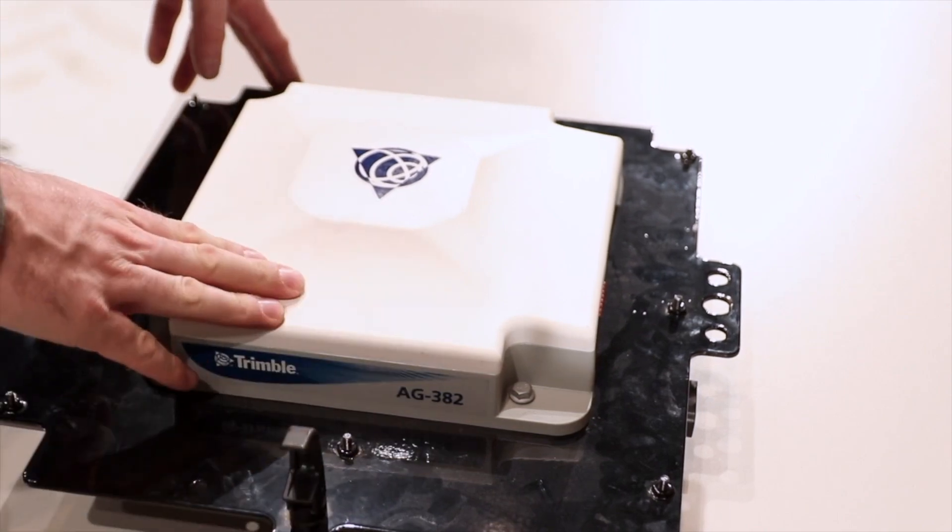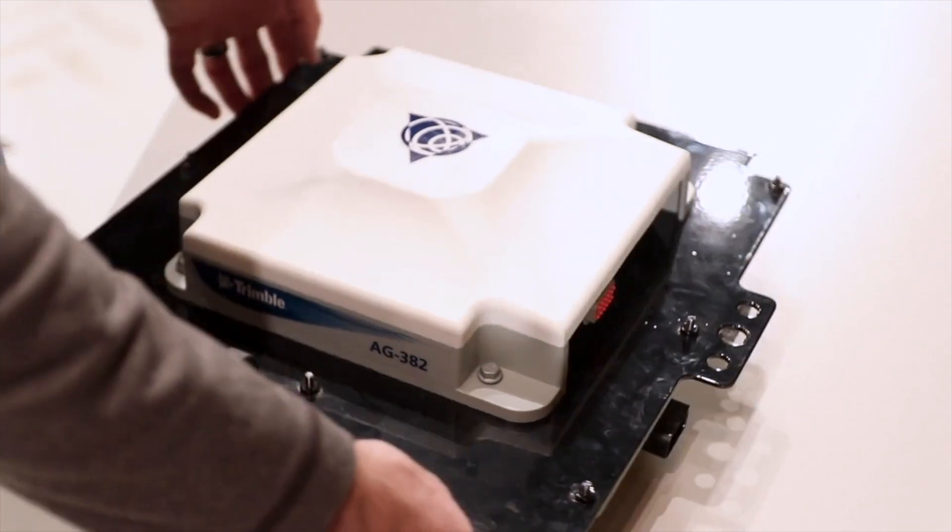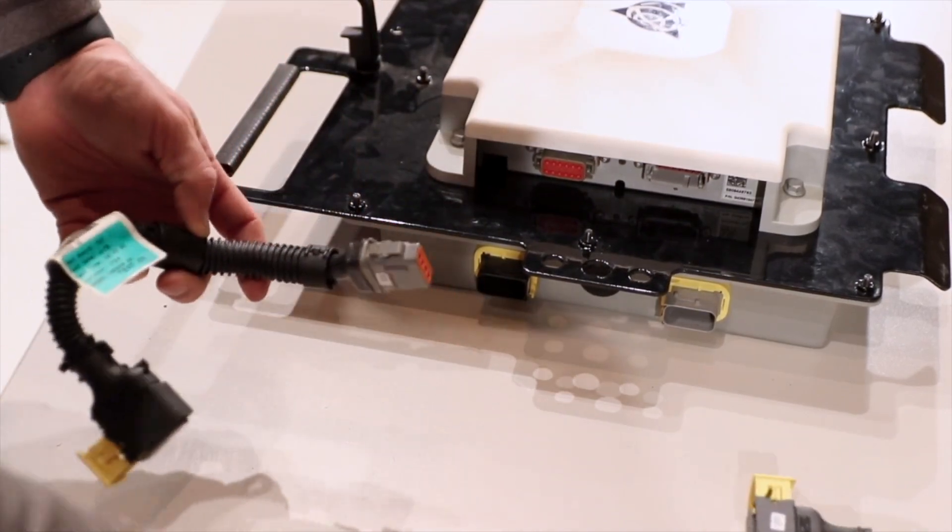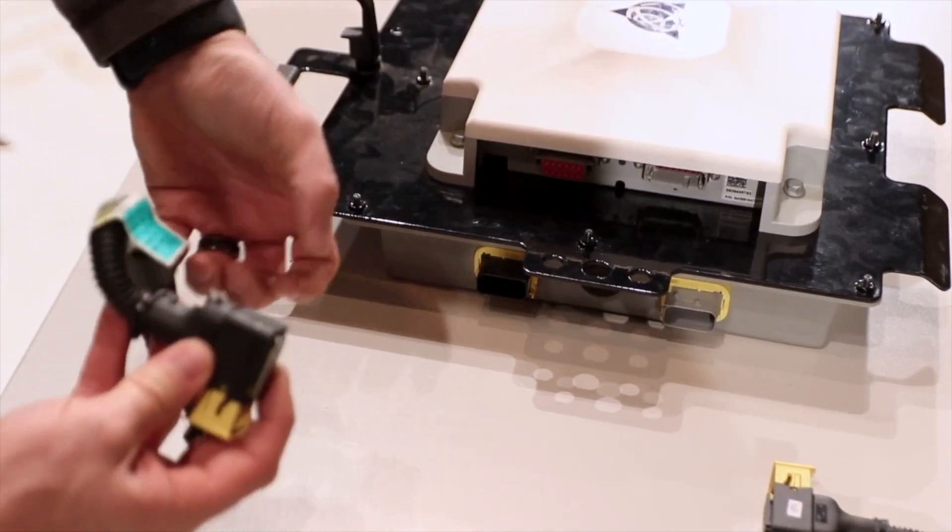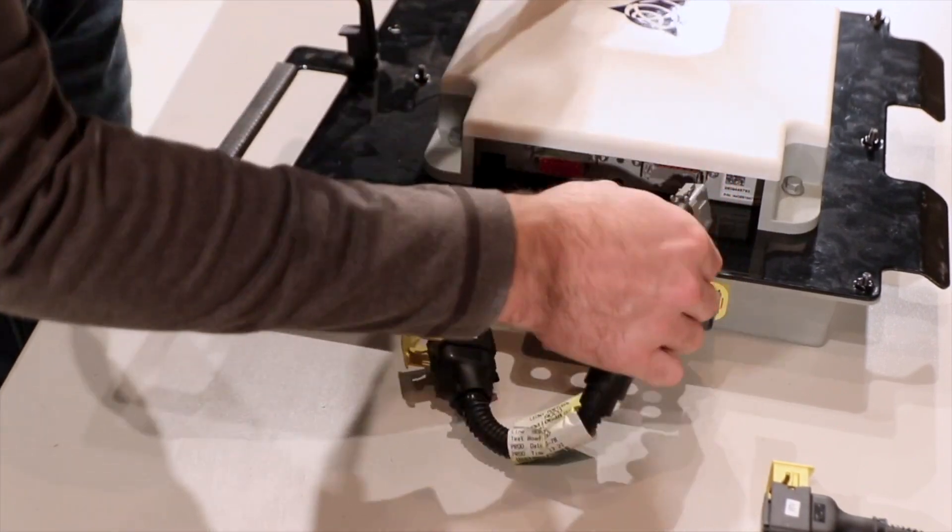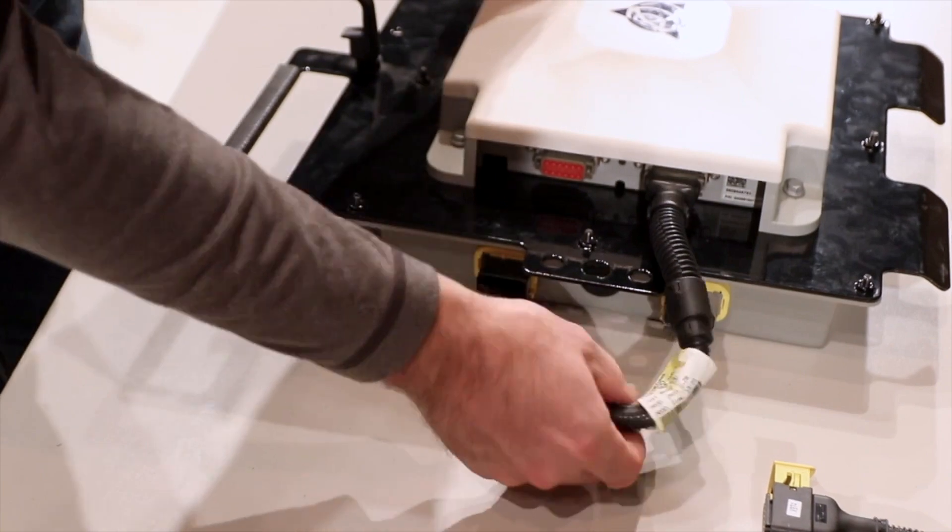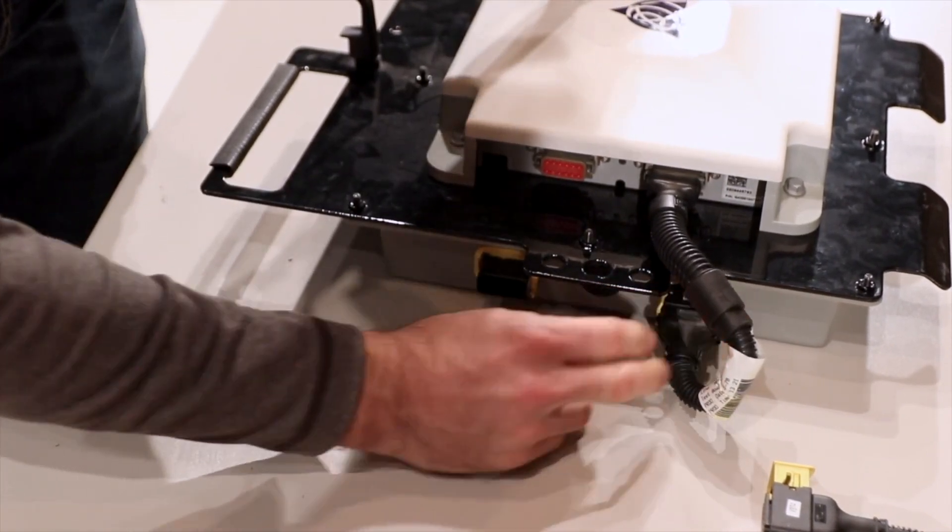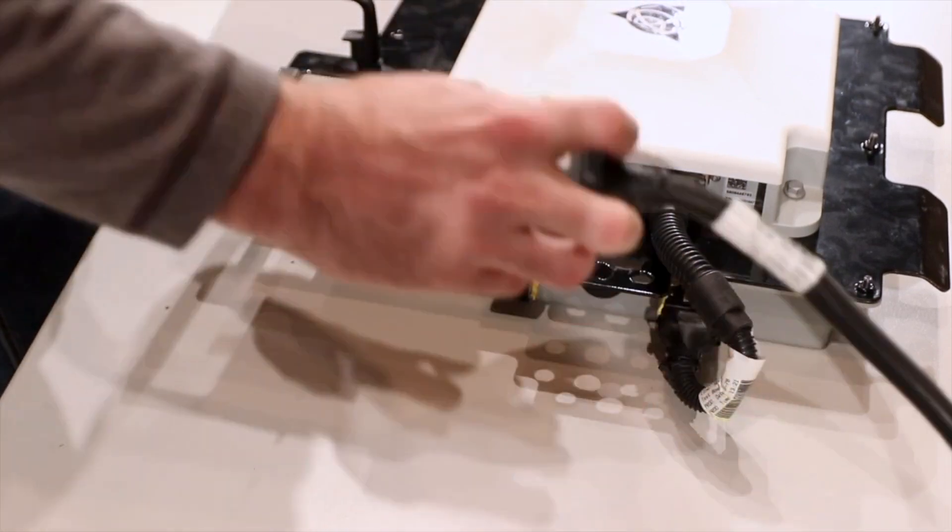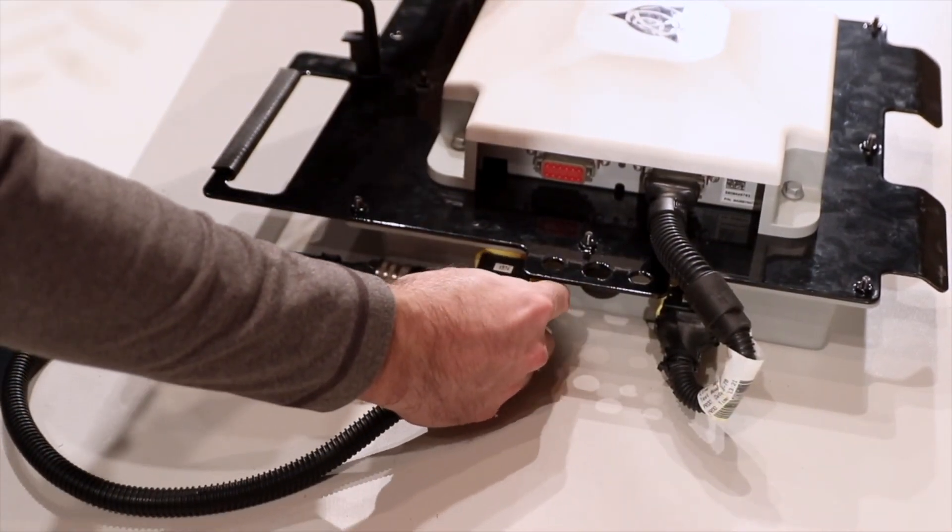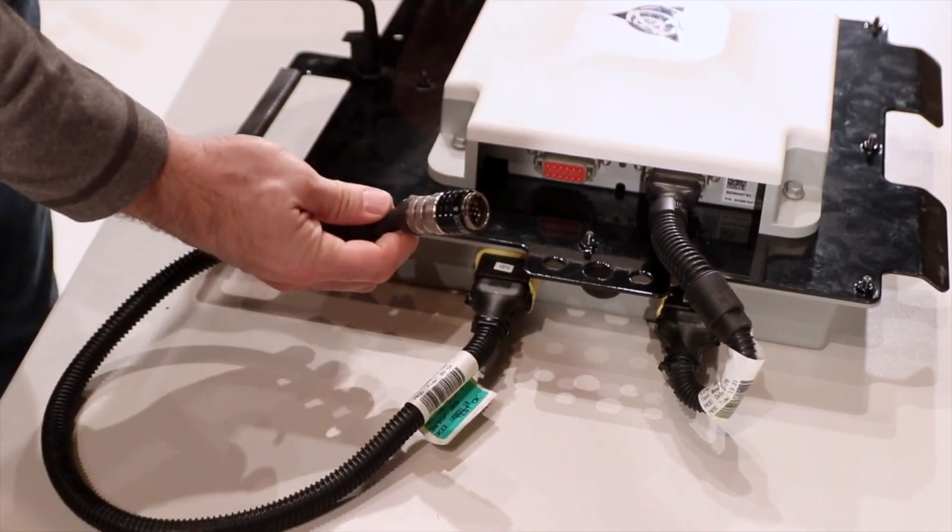Now that the receiver is installed, we're going to install these harnesses that you will need to finish the installation. This short harness will plug into the back of the 382 and go to the bottom part of the housing. Then this harness will plug into the other port on that bottom part of the housing, and this end will go to the tractor.